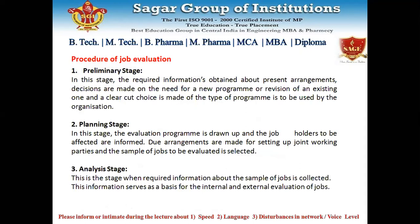The first stage is the primary stage: choose the scheme. Here we require knowing whether we have to apply a new setup or a new program, or if we need to revise the existing one. This we should determine for our organization. The next stage is the planning stage, where the evaluation program is drawn up and the job holders to be affected are informed. In this stage, we decide which departments will coordinate and how to evaluate a sample of jobs.